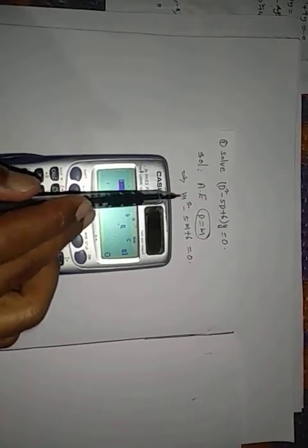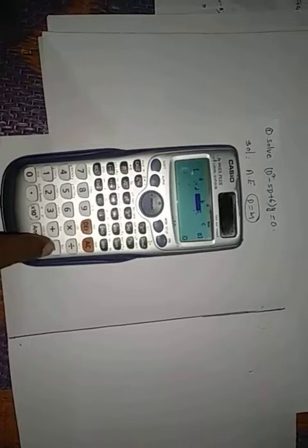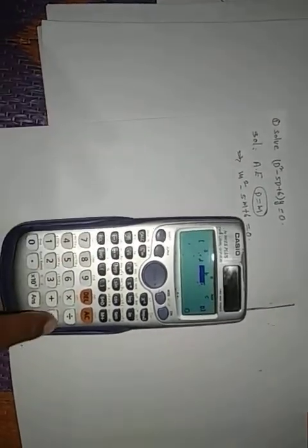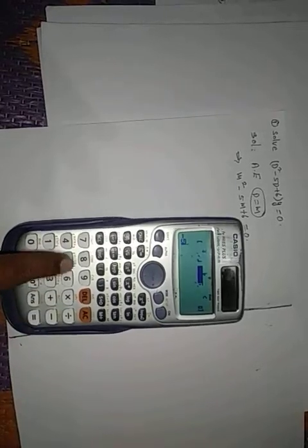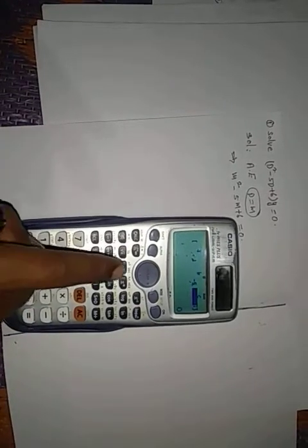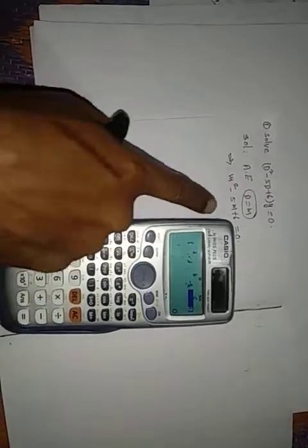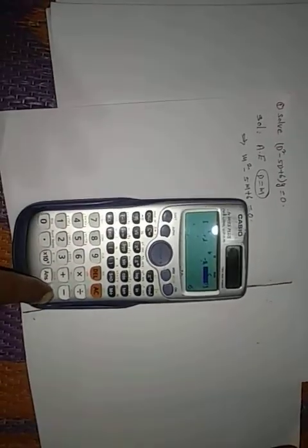So, here m square coefficient is 1. So, 1 is equal to. The next, it is minus 5. Minus 5 is equal to. The next, constant is 6. So, press 6 is equal to. Now, press again equal button. These are the roots.